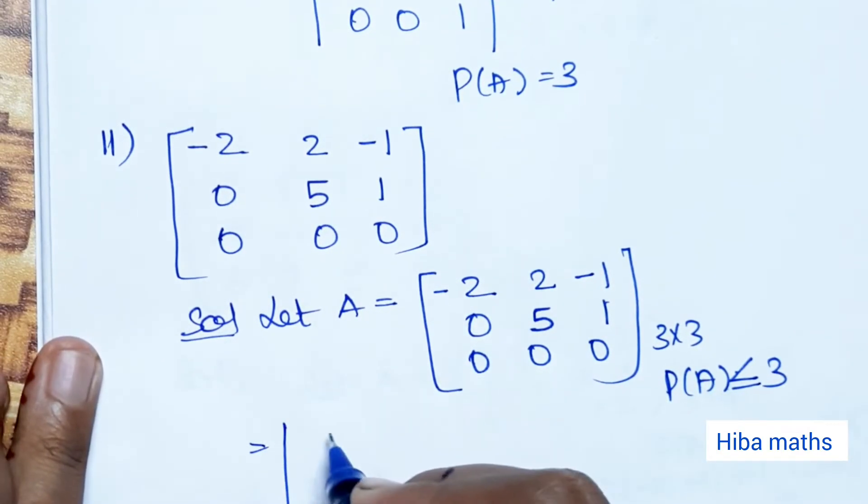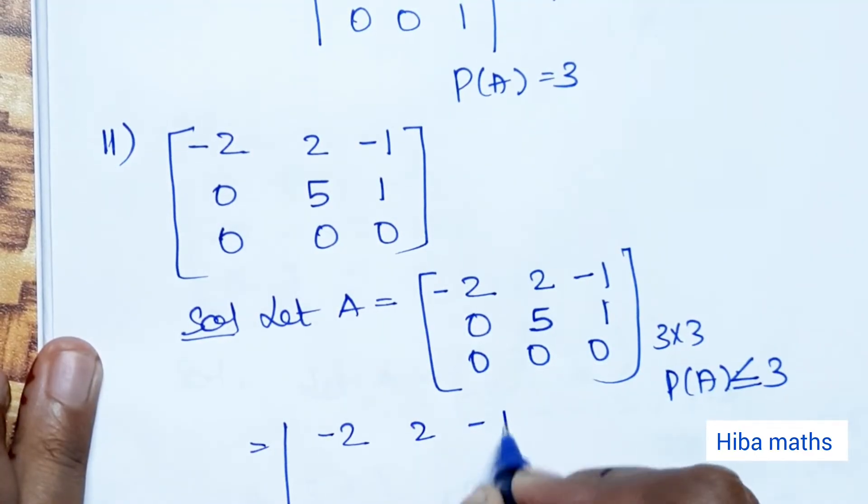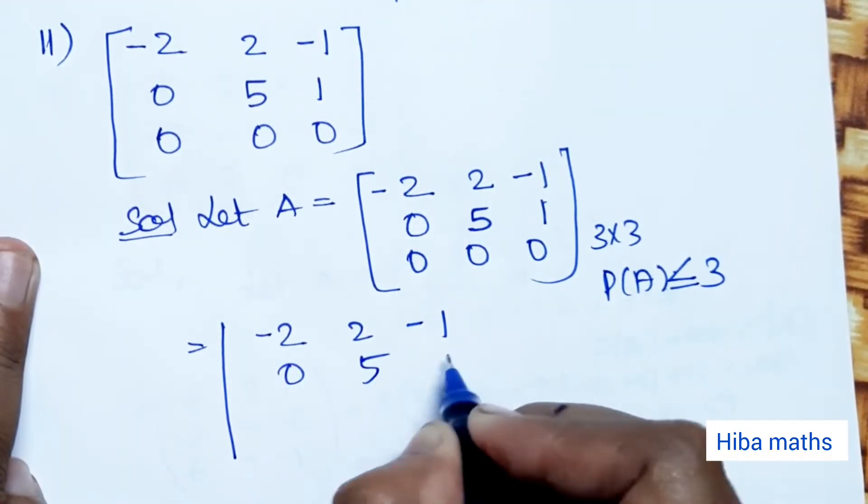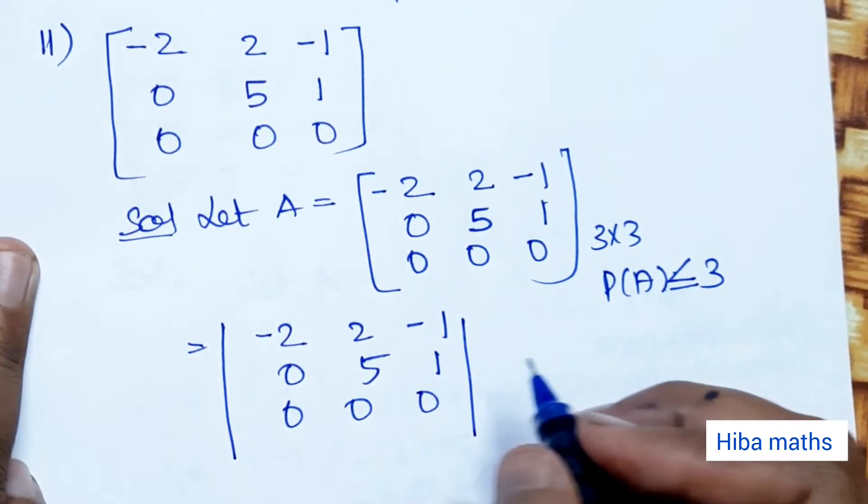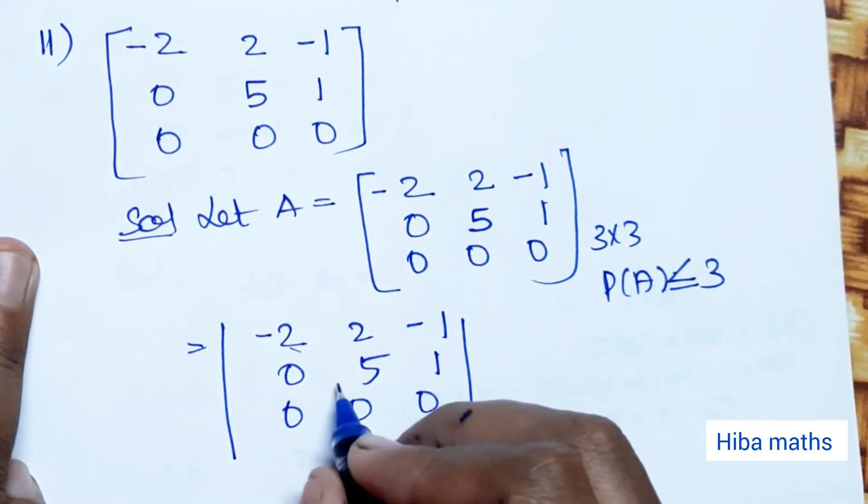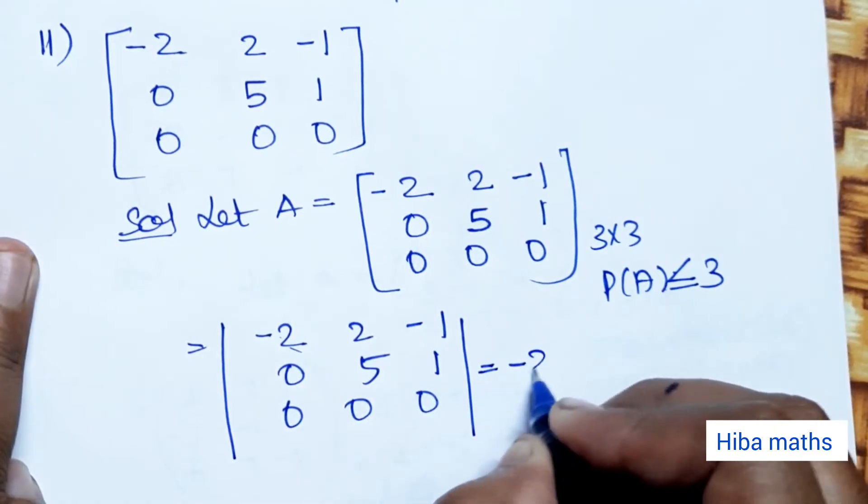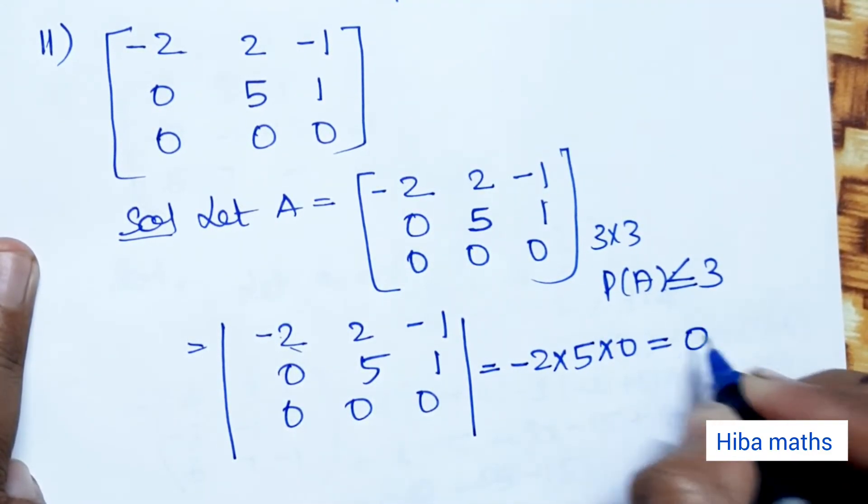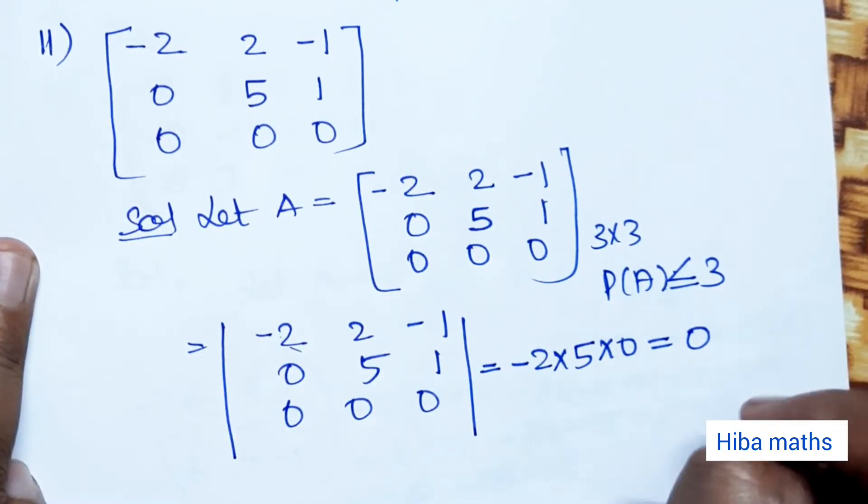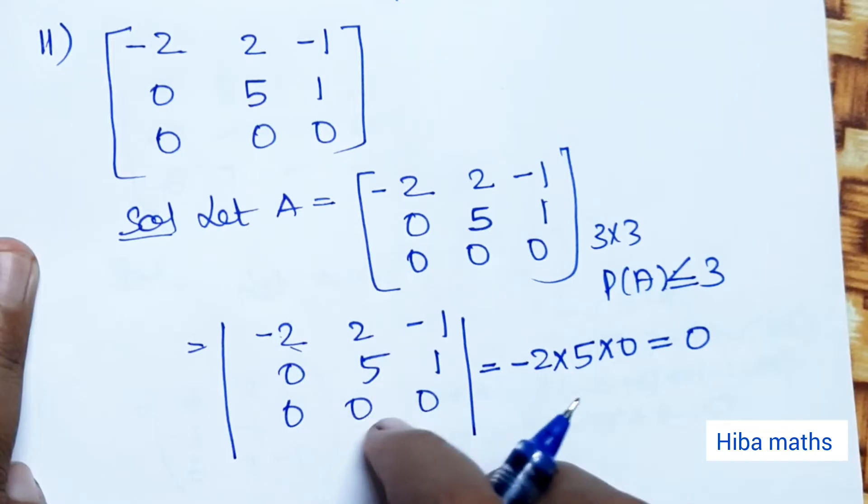The matrix is [-2,2,-1; 0,5,1; 0,0,0]. The product of the diagonal elements is -2 × 5 × 0 = 0. Since the determinant equals 0, the rank is less than 3.